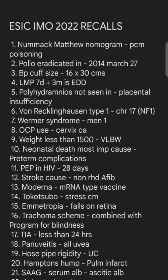Recklinghausen type 1 — the chromosome involved is chromosome 17; this is neurofibromatosis type 1. Wermer syndrome is MEN 1 syndrome, where we see pancreatic cancer, parathyroid cancers, and pituitary tumors. OCP use for more than one year causes cervical cancer. It is also controversial regarding breast cancer, but OCP is protective against endometrial and ovarian cancers.